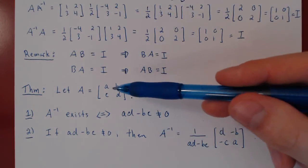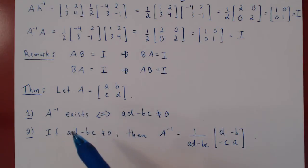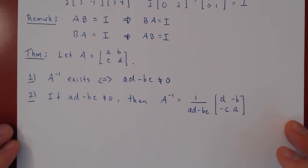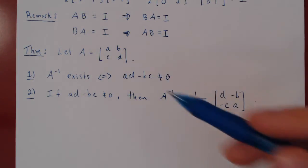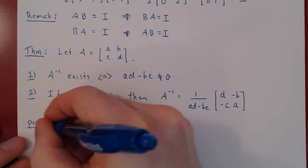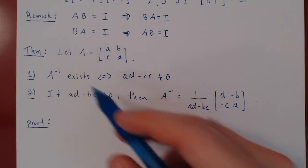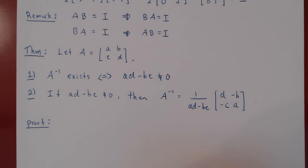This is a beautiful result. If ad - bc is non-zero, A is invertible; otherwise A is singular. A inverse is simply (1/(ad - bc)) times [d, -b; -c, a] — flip the diagonal entries, negate the other two. Let's prove this. The proof will be to multiply the two matrices: this matrix is the inverse of A if their product gives us the identity matrix. We'll do A inverse times A, as we'll already have the scalar multiple in front.